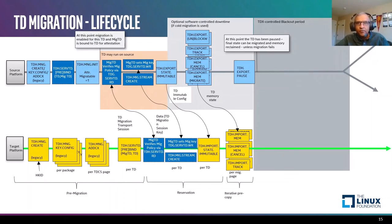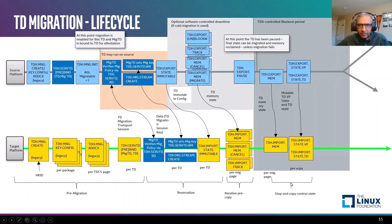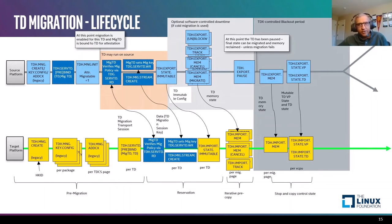The blackout period for live migration starts by the host executing a TDH.export.pause intrinsic, at which point the source TD gets paused. The last few aspects of the memory state can be exported and imported on the destination platform, as well as the last few pieces of CPU state — virtual CPU state — and the mutable state for the TD such as the runtime measurement registers can be imported.